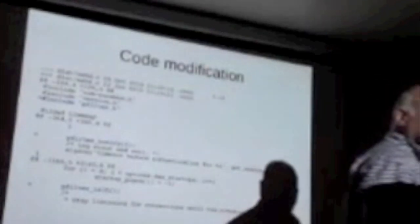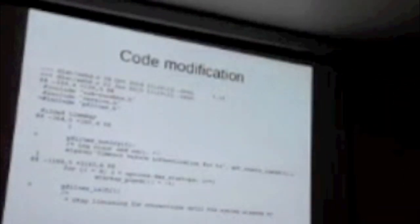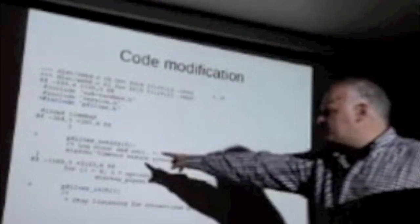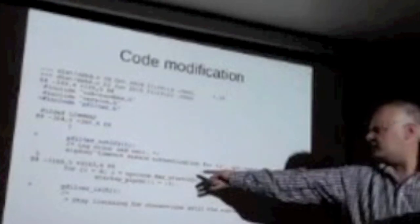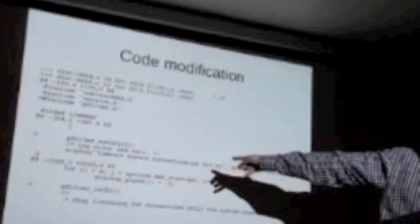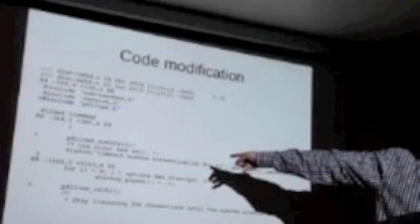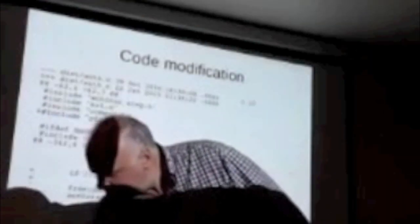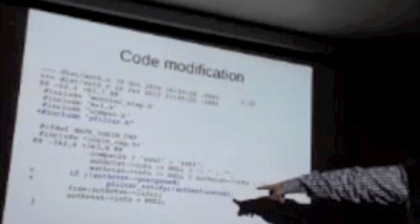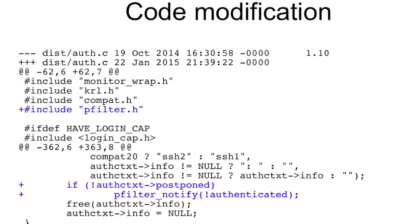In auth.c: if it wasn't a postponed authentication — meaning it actually happened in this function call — and it returns 'not authenticated,' I add one to the blocking factor. That's all I have to add. There's one more case: if the connection timed out without the client sending anything, I add one there too, so I count those passive attacks as well. The initializer code goes somewhere in there. How does it know the SSH attempt failed? The condition says 'not authenticated if not postponed' — this is the code inside the SSH source, not log parsing.